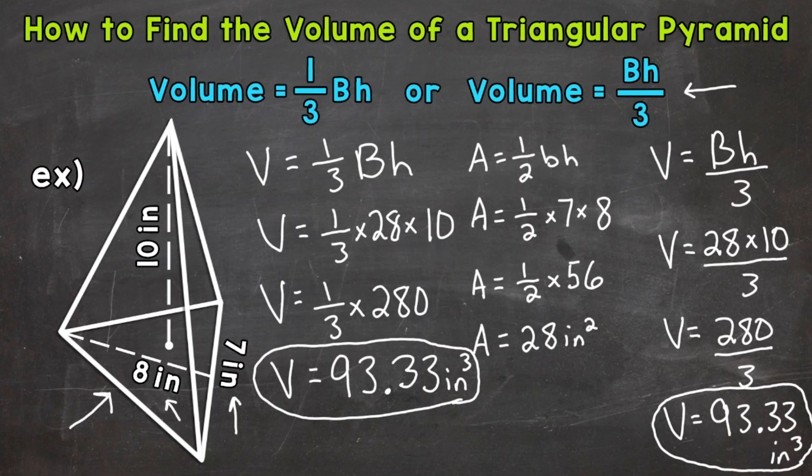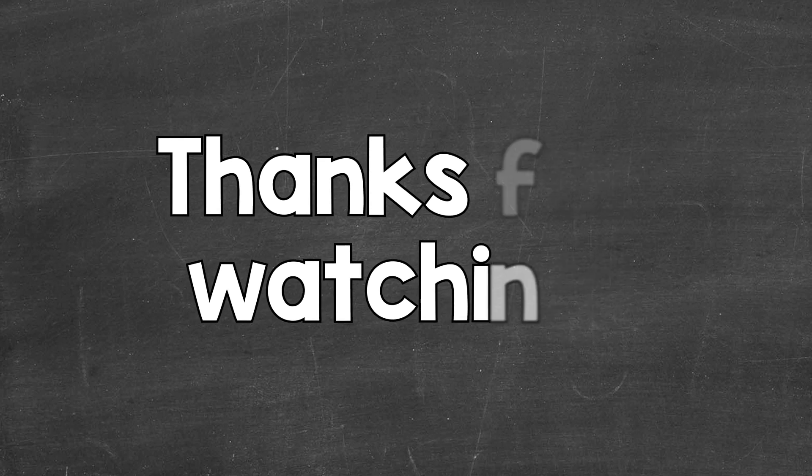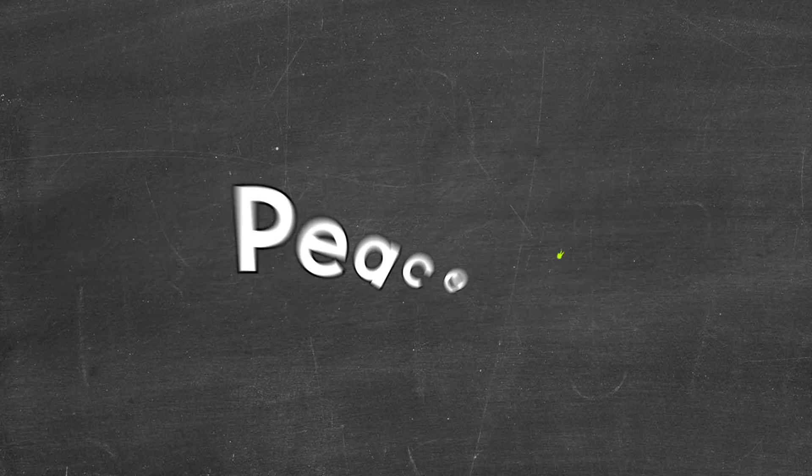So there you have it. There's how you find the volume of a triangular pyramid. 1 third times the area of the base times the height. Or the area of the base times the height divided by 3. I hope that helped. Thanks so much for watching. Until next time. Peace.